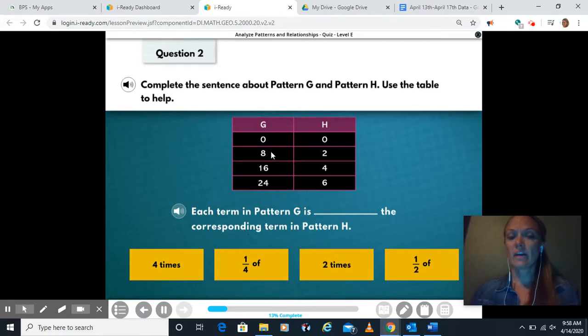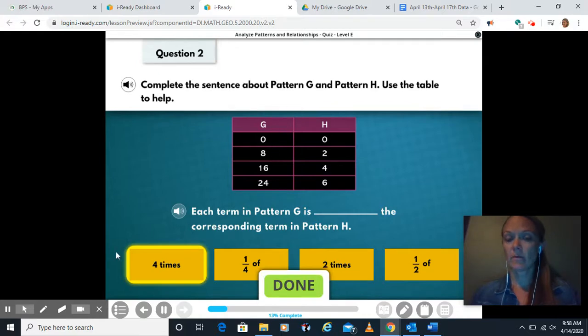Is it two times? Is eight two times bigger than two? Is sixteen two times bigger than four? No, we already said it was four times bigger. Or these half, is eight half of two, is sixteen half of four? No. The column G numbers are four times bigger than the numbers in column H.